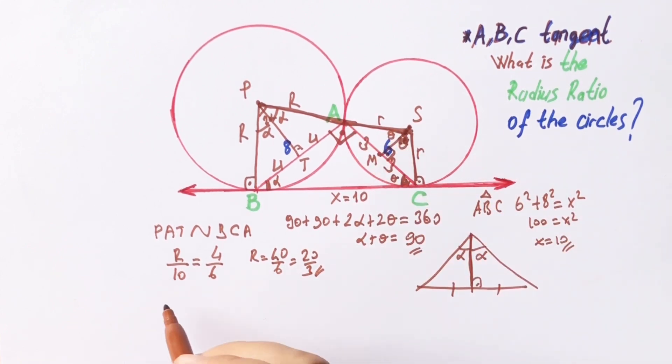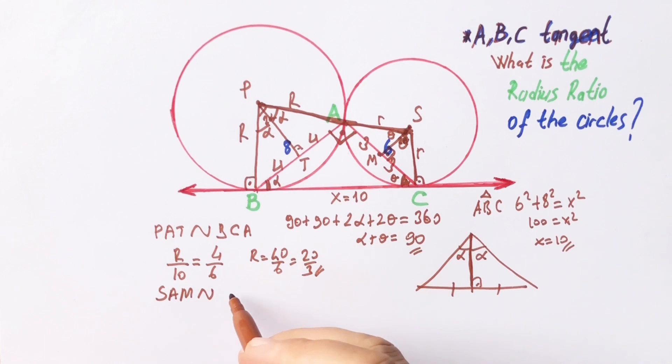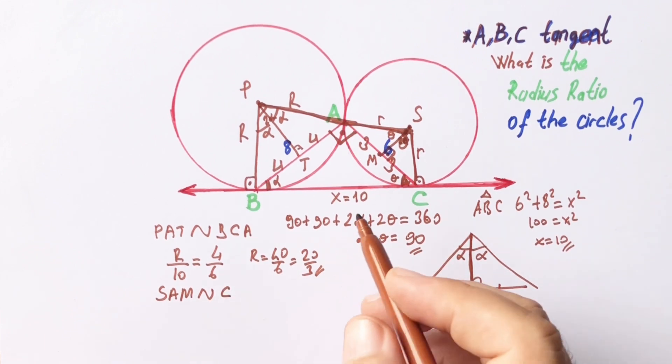In this triangle, SAM is similar to triangle CBA.